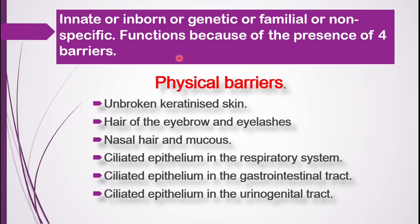The innate or inborn immunity functions in our body because of the presence of four barriers. The first barrier is known as the physical barrier. The first attribute under the physical barrier is the unbroken keratinized skin. Our body is completely covered by skin, which contains a protein known as keratin.